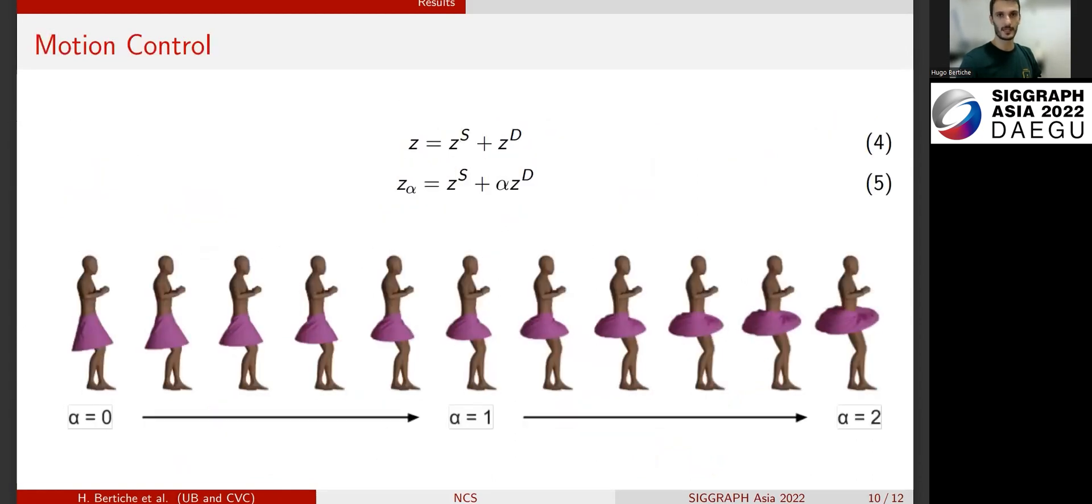We also present a never seen before property: motion control. Thanks to the disentanglement of the learned subspace, we can interpolate and extrapolate the level of dynamics in our prediction as shown in the image.